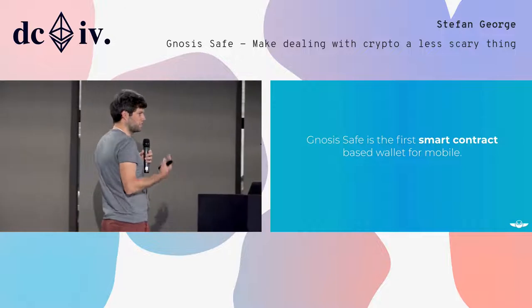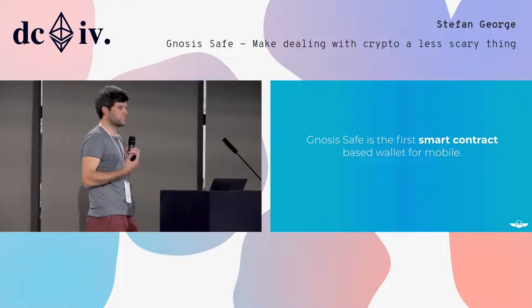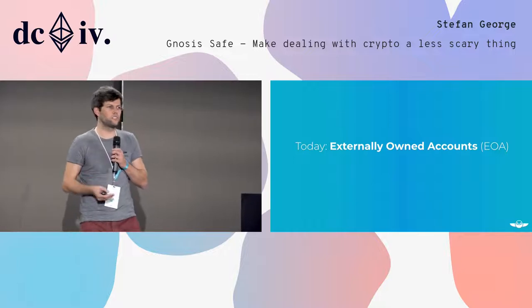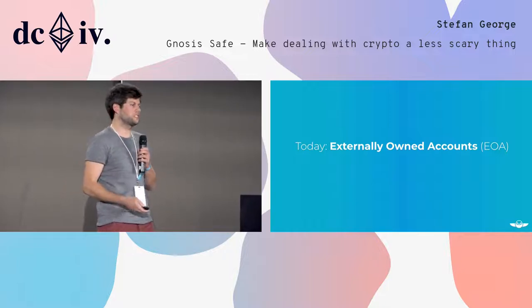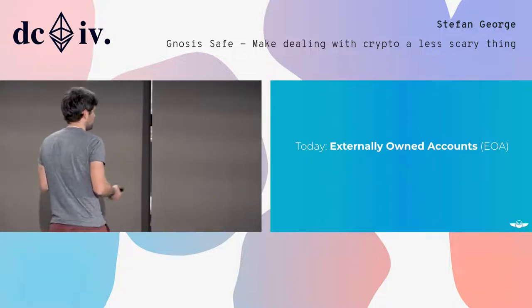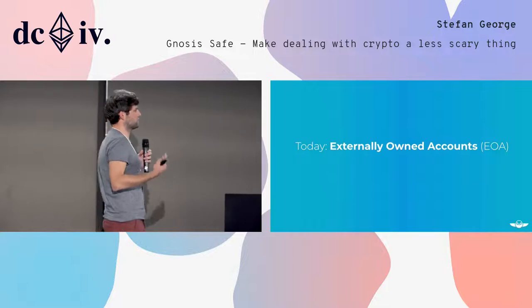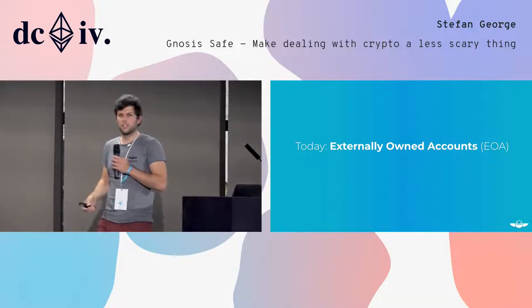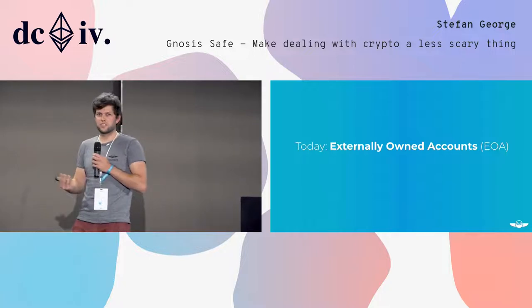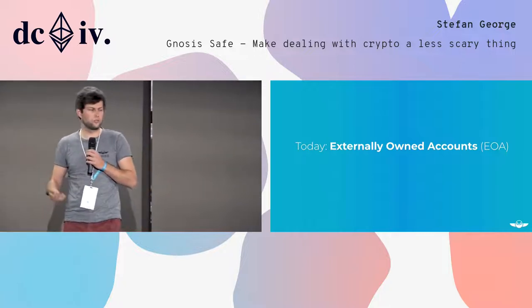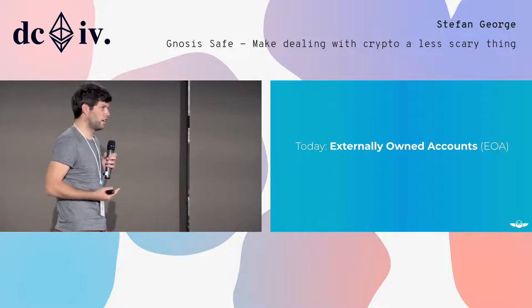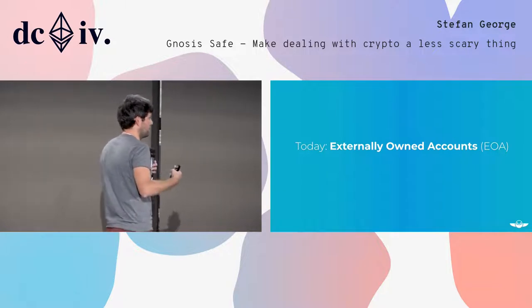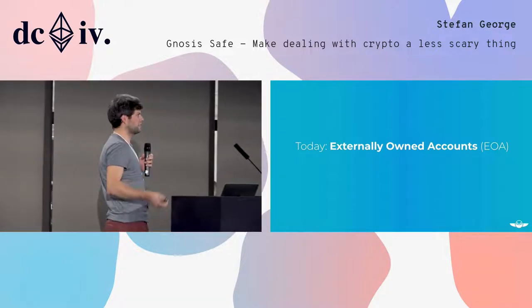So what are the implications of using a smart contract? Let's look at how all the other wallets currently interact. They use the account model where you have externally owned accounts, which are controlled by a private key that users hold. You sign Ethereum transactions with this private key, and then the transactions are broadcasted and mined.